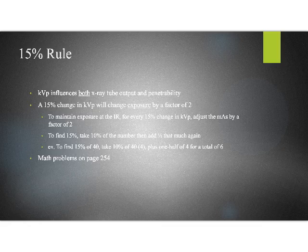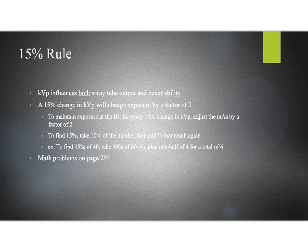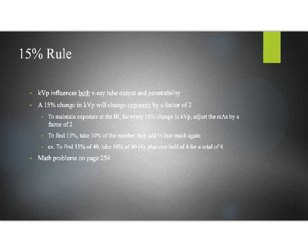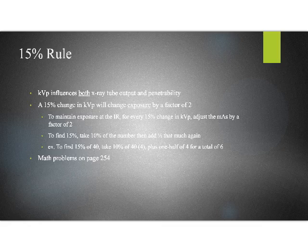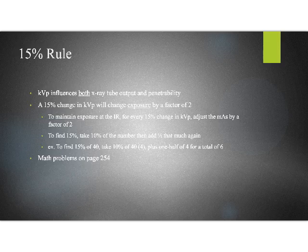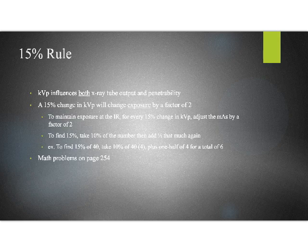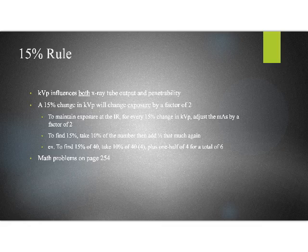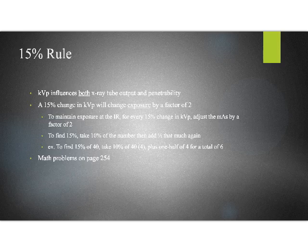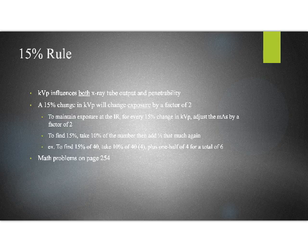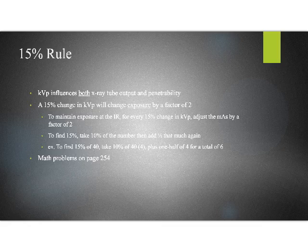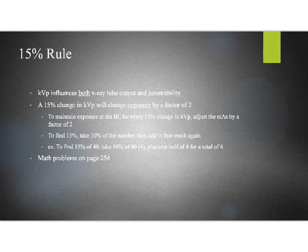So since KVP influences both x-ray tube output and penetrability, we have to do some recalculations here. The 15 percent rule is pretty much gospel. The registry tests based on it, and it has become a universal rule of how do you make changes with the KVP without adversely affecting the exposure at the image receptor. Anytime we change the KVP by 15 percent, that is equal to changing the exposure by a factor of two. That means that KVP is a very powerful change of exposure. A tiny, tiny change in KVP doubles exposure. A tiny turning down of KVP cuts the exposure in half.